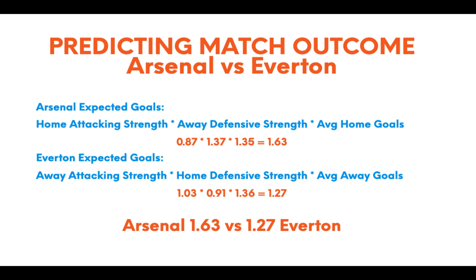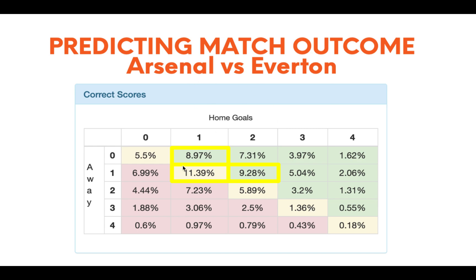Don't go throwing your mortgage on Arsenal beating Everton based on those figures alone — 1.63 to 1.27 doesn't mean Arsenal will definitely win. The Poisson distribution model now needs to be applied, which uses various factors to weight the averages for home and away. If you want to know more about the intricacies of the Poisson distribution model, check the previous videos or look online. You punch the two expected goals figures into a Poisson distribution calculator, which you can find online, and it gives you outcome probabilities for each scoreline.